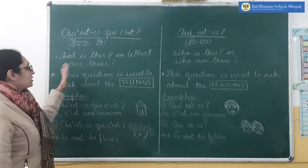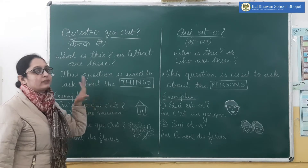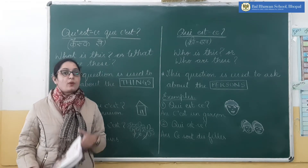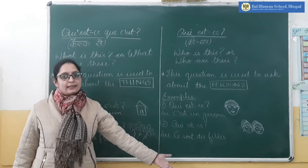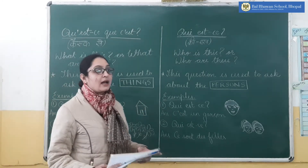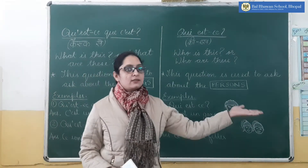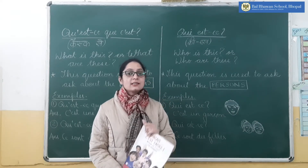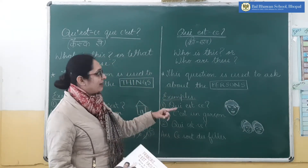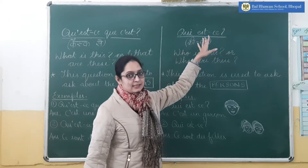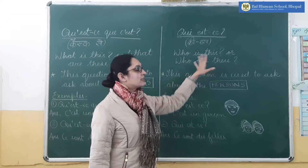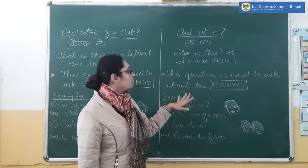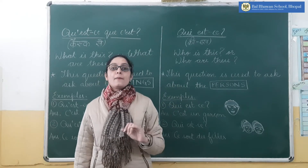This question is used to ask about things. As you already know, 'what is this' we never use for a person. If a person is standing there, we cannot ask 'what is this' — we will always ask 'who is this'. So for 'who is this', we have the next chapter, the 11th chapter, that is 'Kes'. Kes means 'who is this' or 'who are these', and this question we use to ask about persons.